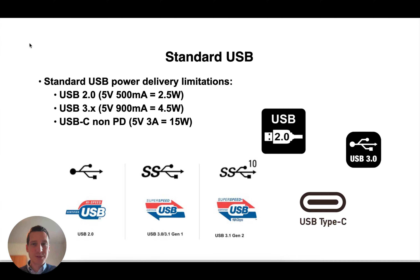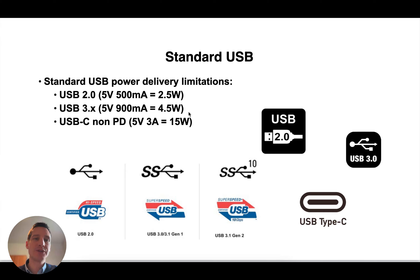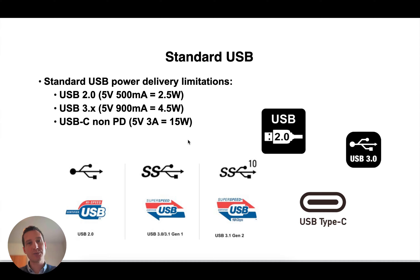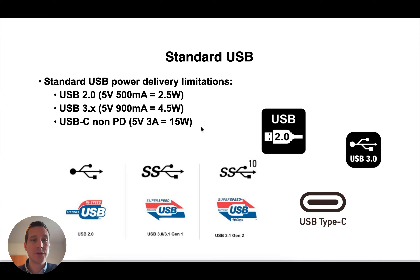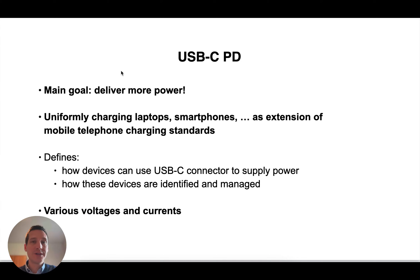We were limited with standard USB and even with USB-C without power delivery to certain power level limits. So USB 2.0 had 2.5 watts, USB 3 was on 4.5 watts. On USB-C you can go up to 3 amps, so 15 watts maximum. But that's certainly not sufficient to charge a laptop. Or if you want quick charging of your smartphone, the 15 watts will also be relatively slow. So how can we increase that? That is where USB-C power delivery comes in.